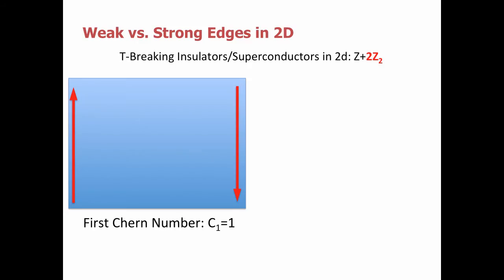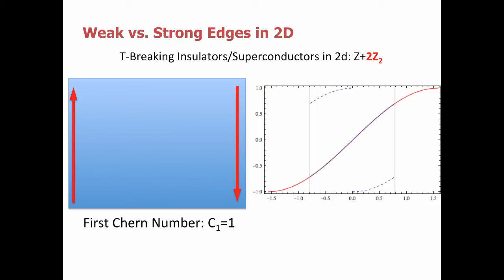Let me briefly motivate why translation symmetry is important for protecting weak topological phases. The easiest way is to study edge states when we break translation symmetry by adding a staggered potential to the boundary, which breaks translation symmetry by a factor of two — it basically dimerizes the edge. For comparison, I've shown a strong topological system with chiral edge states. Looking at the edge state dispersion in the edge Brillouin zone, I see a single monotonically increasing dispersive branch — a chiral edge mode. If I add a staggered potential to the edge, I fold the Brillouin zone in half, but I still get a single chiral branch at every energy. No perturbation can destabilize this edge state, so I have a robust chiral phase even after breaking translation symmetry on the edge.